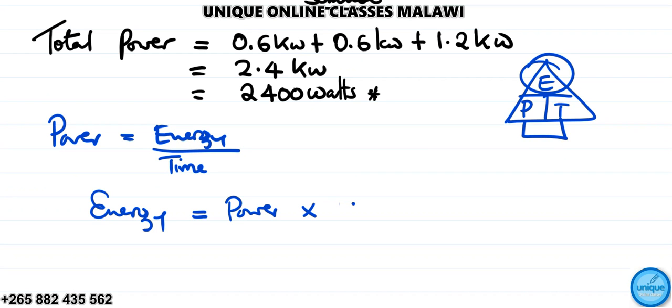Here, time should be in hours because electrical energy is charged per kilowatt hour. So our time should be in hours. Power is 2,400 watts, which in kilowatts is 2.4 kilowatts.